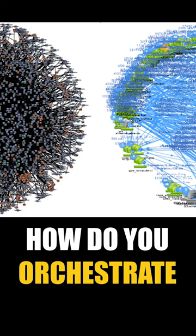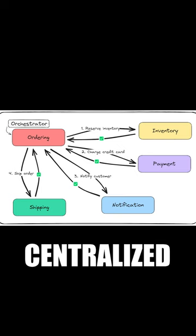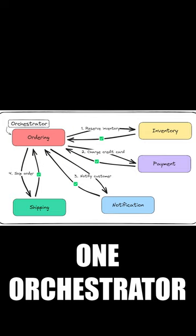How do you orchestrate your microservices? Orchestration is a centralized approach in microservices communication where one of the services takes on the role of the orchestrator and it coordinates the communication between the individual services.